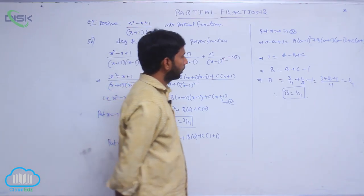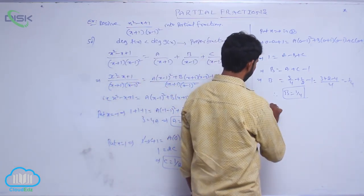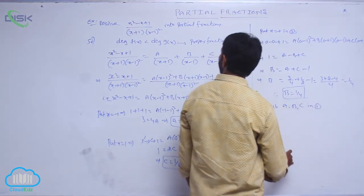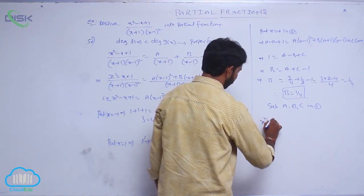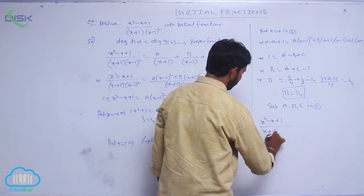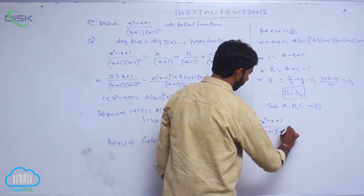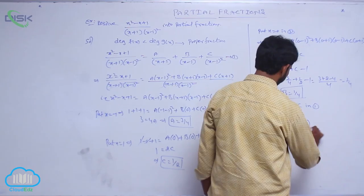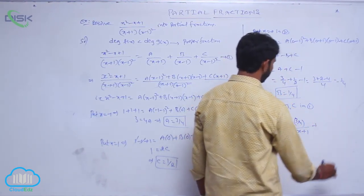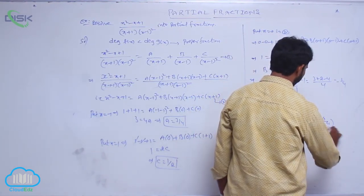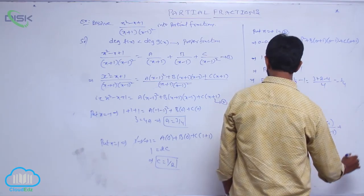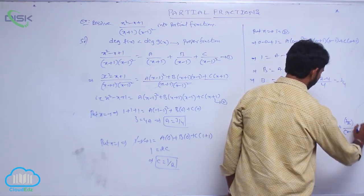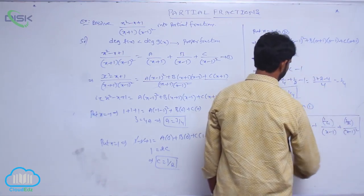Substituting A, B, C into condition number 1: x squared minus x plus 1 by x plus 1 into x minus 1 whole square equals 3 by 4 over x plus 1, plus 1 by 4 over x minus 1, plus 1 by 2 over x minus 1 whole square.